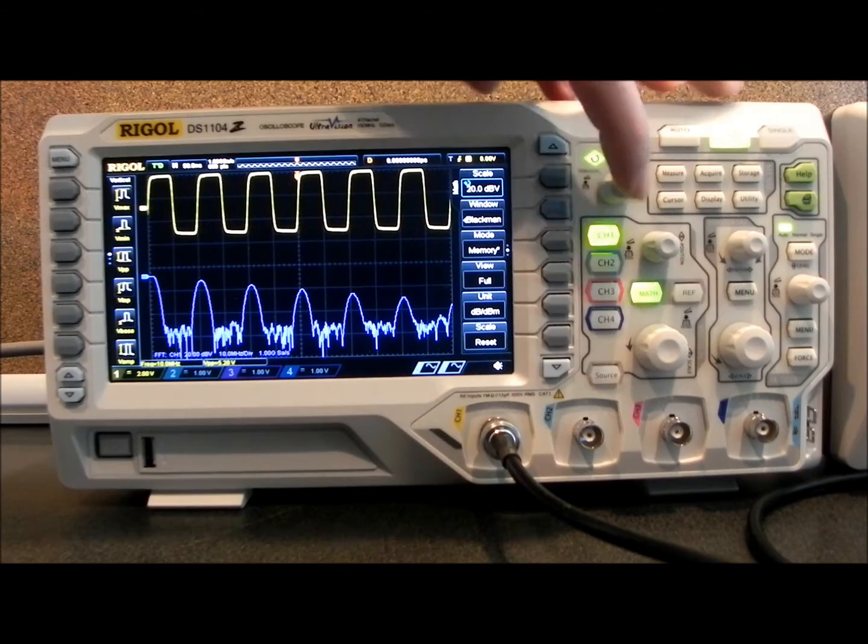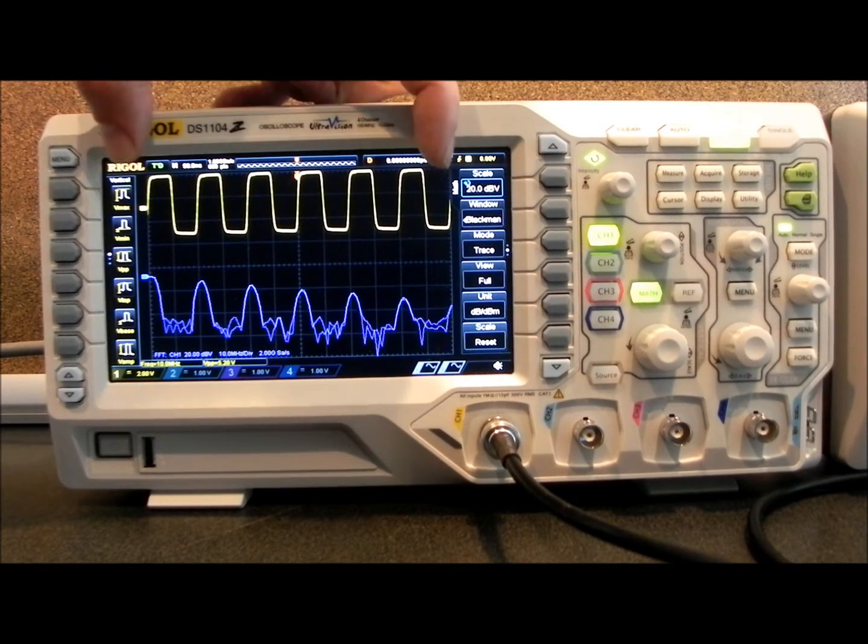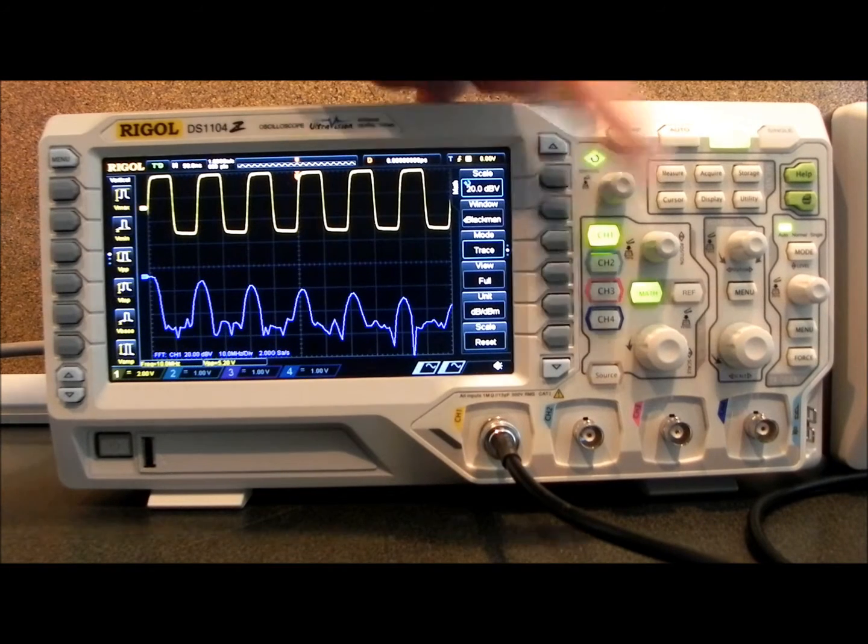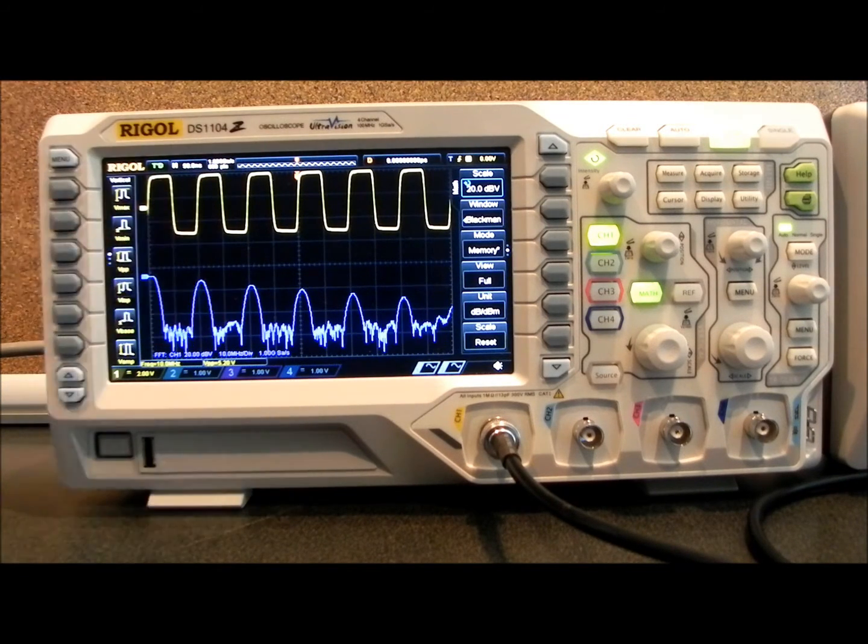That's because when we're using the trace, we're actually calculating on the displayed data, and when we go to Memory, we're going to be using a larger data set. When we have a larger data set, we have higher resolution in the frequency space, and you can see now we've got quite a bit more detail.